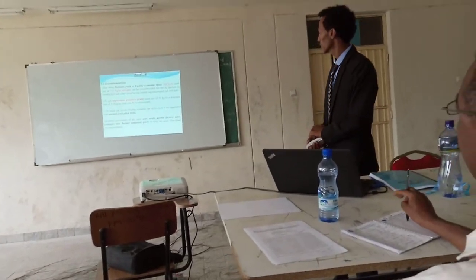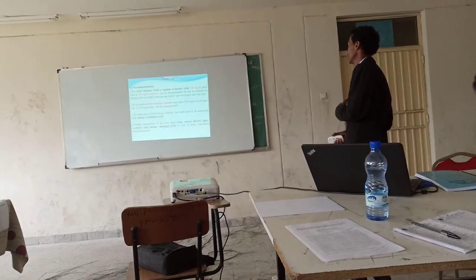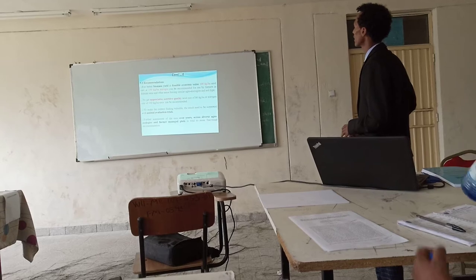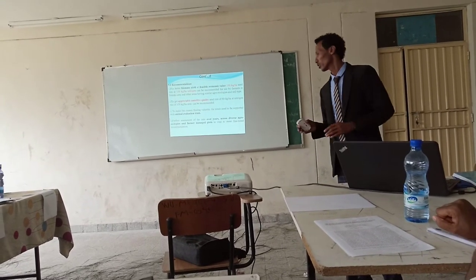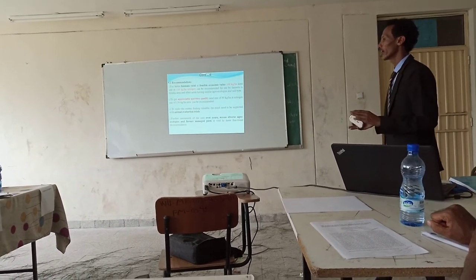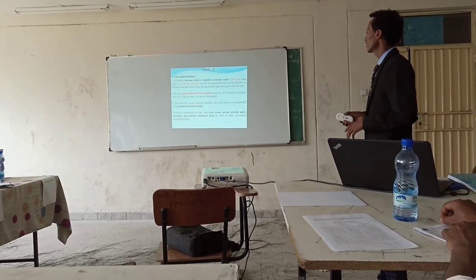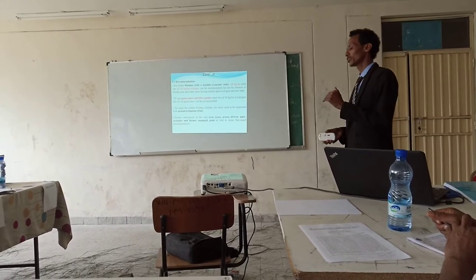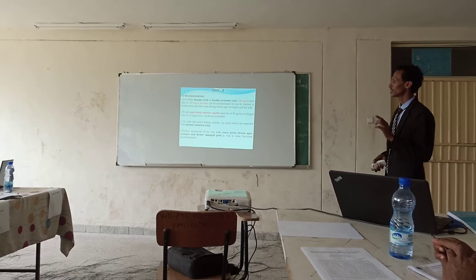For the recommendation: for better biomass yield at specific economic value and economic feasibility for the farmers, 100 kg per hectare seeding rate with 150 kg per hectare nitrogen can be recommended for farmer use. To make the current findings more valuable, the results need to be supported with animal evaluation trials, and further assessment can be investigated over multiple seasons, since this is a one-season experiment.